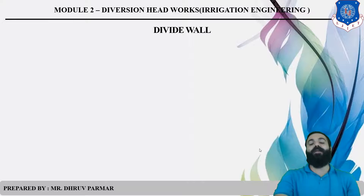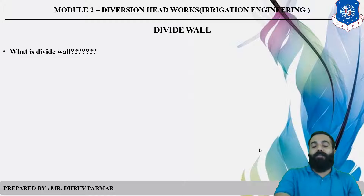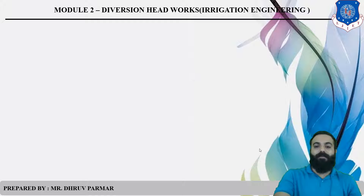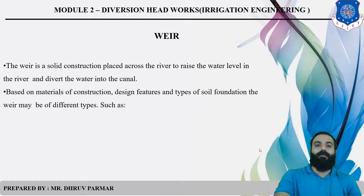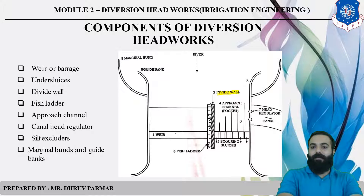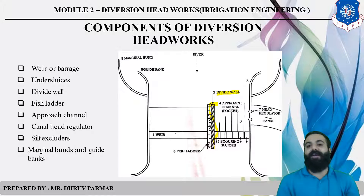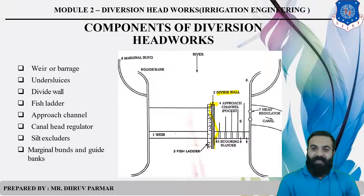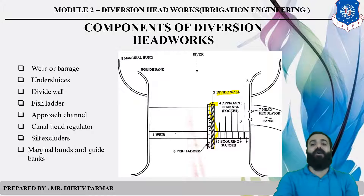The next topic is Divide Wall. A Divide Wall divides two things — the fish ladder and the undersluice. As shown in the diagram, this is the Divide Wall. The basic purpose of the Divide Wall is to dissipate the energy of flow and to support the fish ladder.